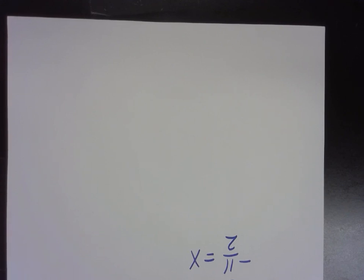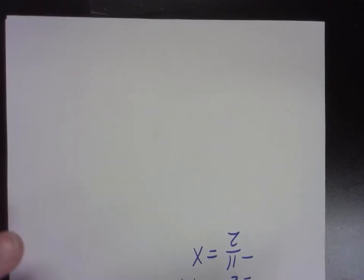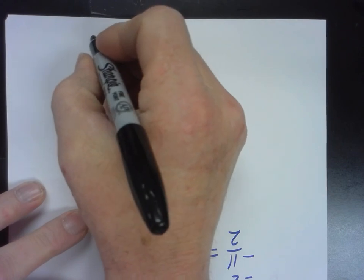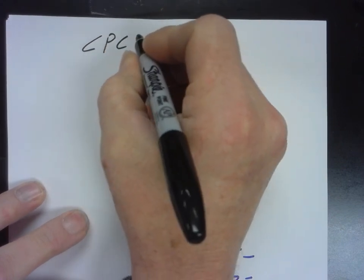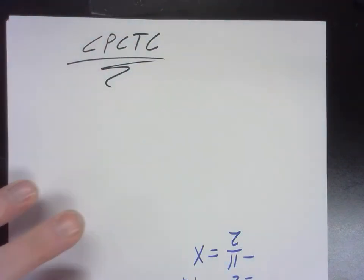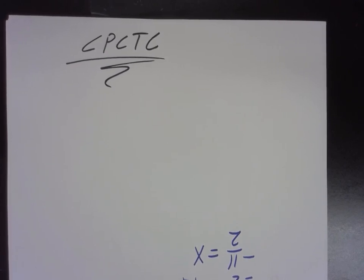All right. So I want to go over this corresponding parts of congruent triangles are congruent thing. We talked about it a couple of times, but on the worksheet that we were doing, I don't think it was really getting through to you. So let's go over this again.